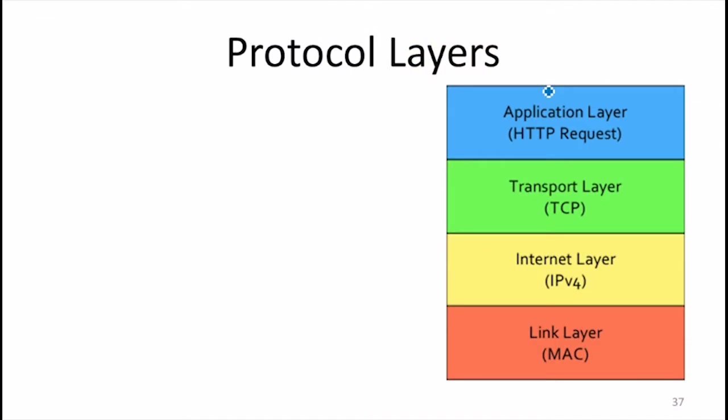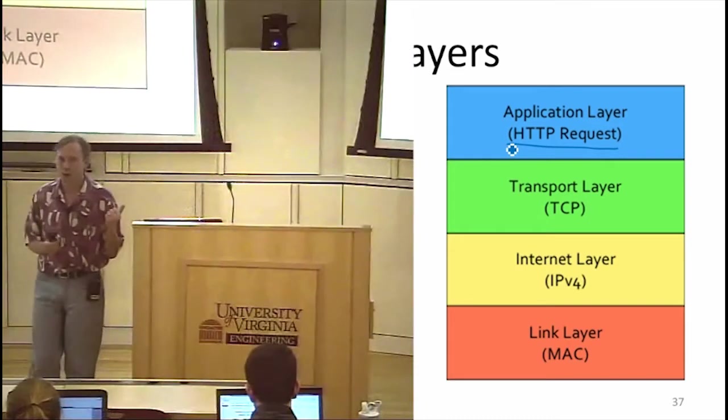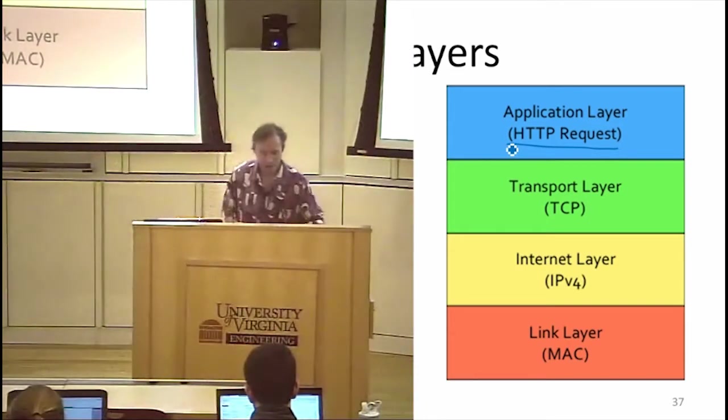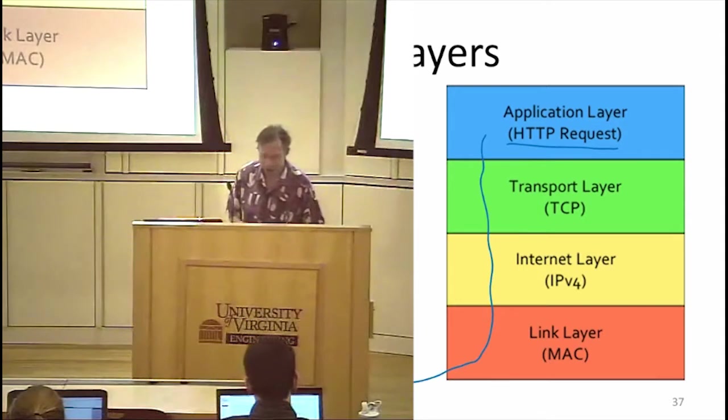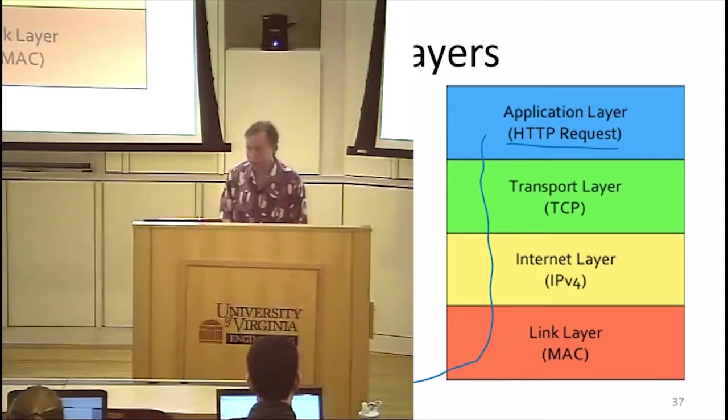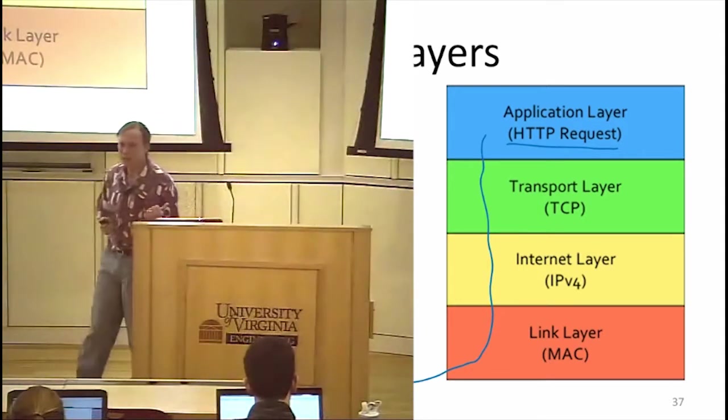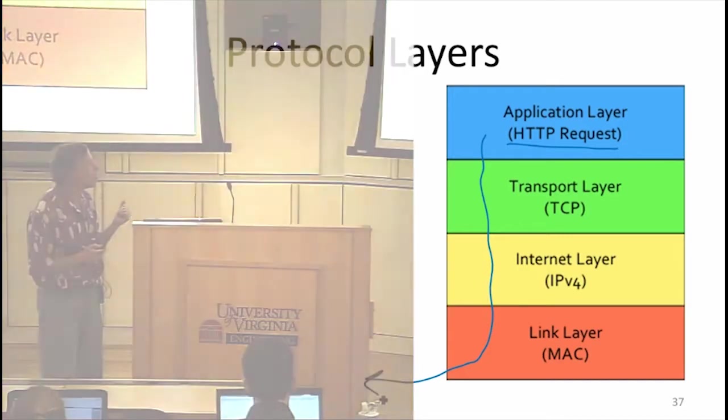People talk about the network having layers. The layers are really just abstractions to make it easier for humans-designed networks. Web requests are at that layer using this HTTP protocol. Once packets get transmitted, they're going through these other layers before they're actually sent. And what's happening on the wire depends on these lower-level protocols that are at that layer.